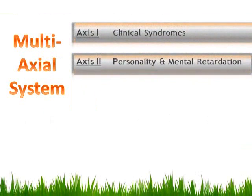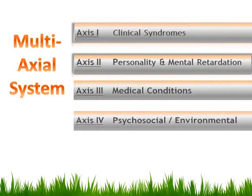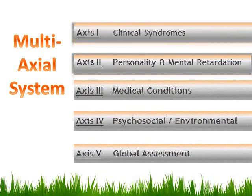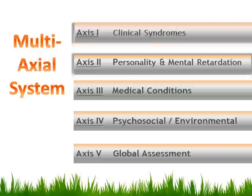One of the most outstanding characteristics of the DSM is the multi-axial system. In the DSM-4 there are five axes. Consider these axes like chapters or subcategories describing different ways of looking at disorders — each axis contains a different context from which mental disorders can be viewed.